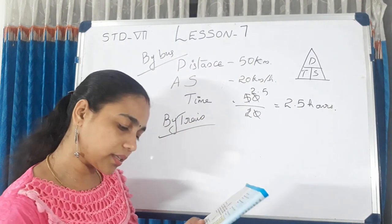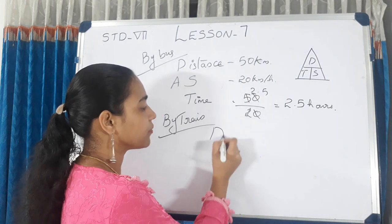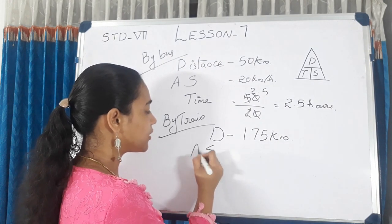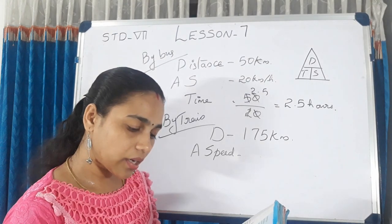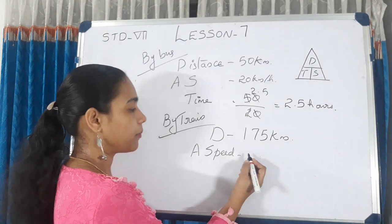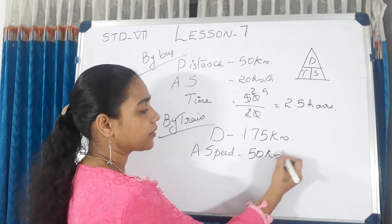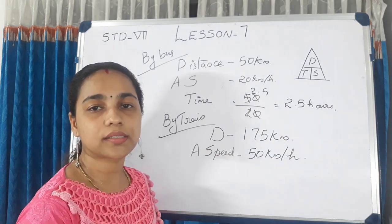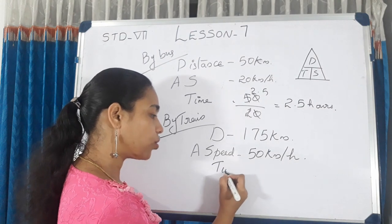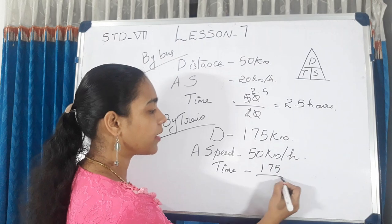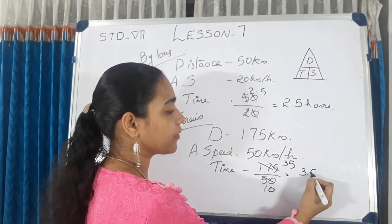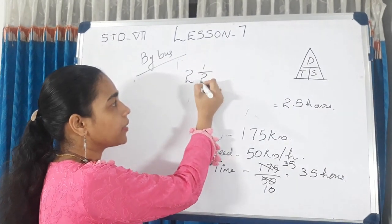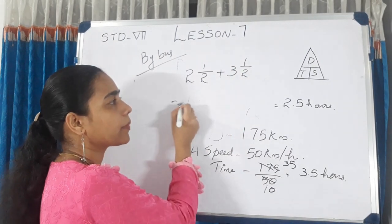For the train: the distance is 175 km and the average speed is 50 km per hour. Time for train = 175 divided by 50 = 3.5 hours. Total travel time = 2.5 + 3.5 = 6 hours.